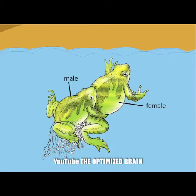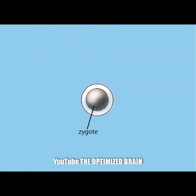The male overlays these eggs with a cloud of sperm. Frogs and most other amphibians reproduce through external fertilization. The fertilized egg, called the zygote, contains all the fat and proteins required for the early phase of frog development.